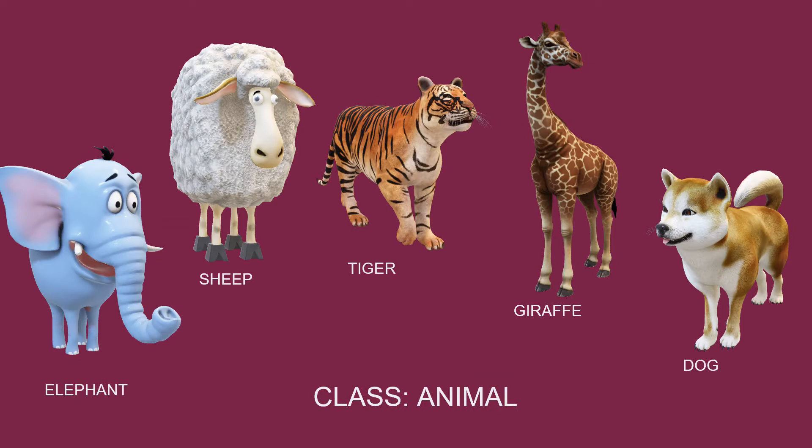Let us understand classes and objects with real-world example. Objects like elephant, sheep, tiger, dog belongs to animal class. Each object has state and behavior. For example, a dog has state: color, name, height, age as well as behavior: barking, eating and sleeping.